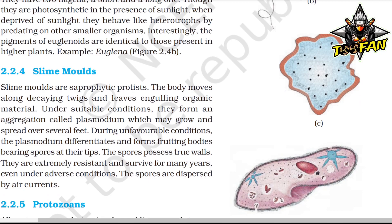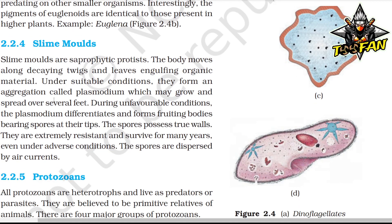Slime Molds: Slime molds are saprophytic protists. The body moves along decaying twigs and leaves, engulfing organic material. Under suitable conditions, they form an aggregation called plasmodium, which may grow and spread over several feet. During unfavorable conditions, the plasmodium differentiates and forms fruiting bodies bearing spores at their tips. The spores possess true walls, are extremely resistant, survive for many years even under adverse conditions, and are dispersed by air currents.